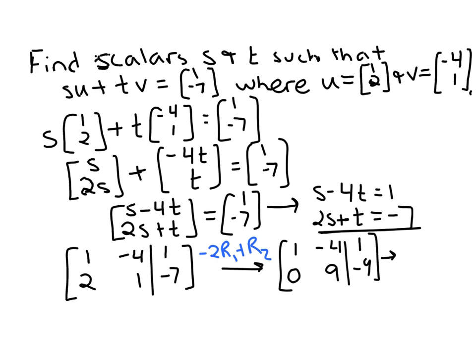And then now if I do one-ninth times row 2, I have [0, 1 | -1].